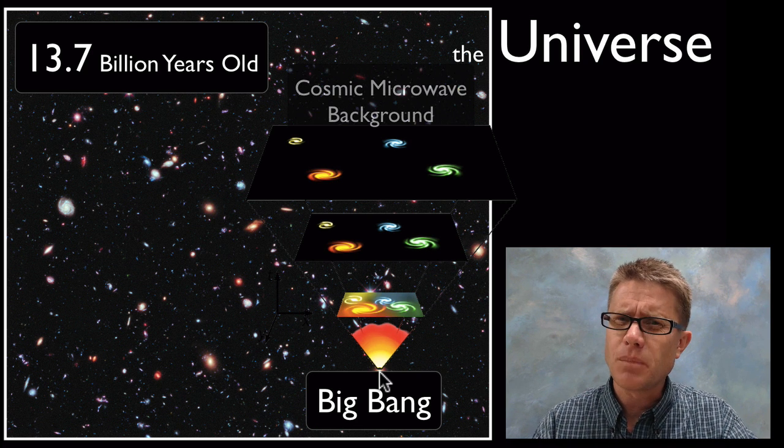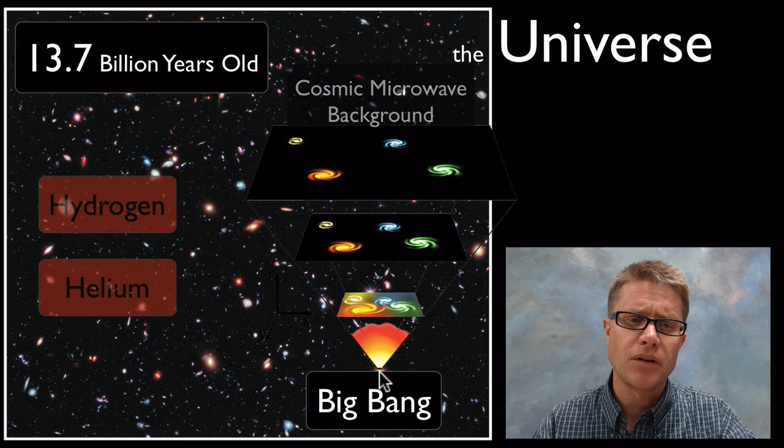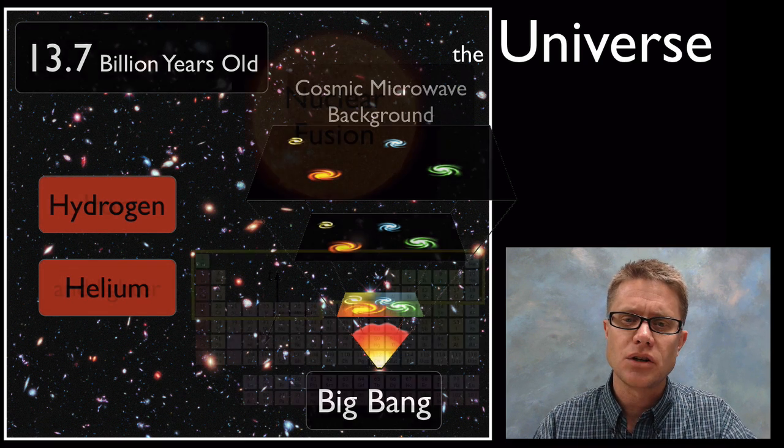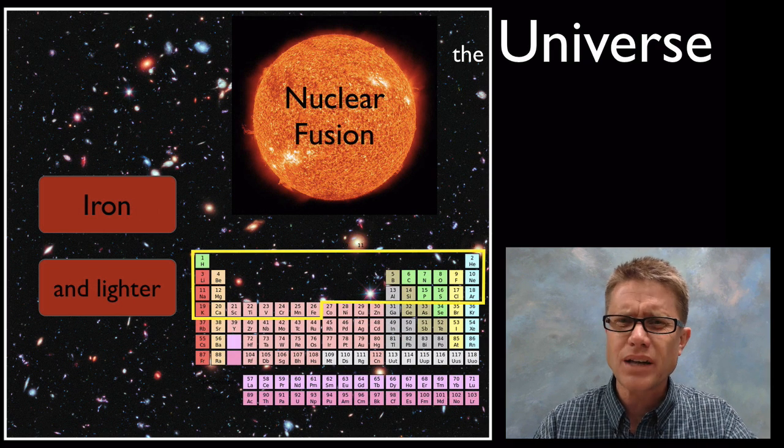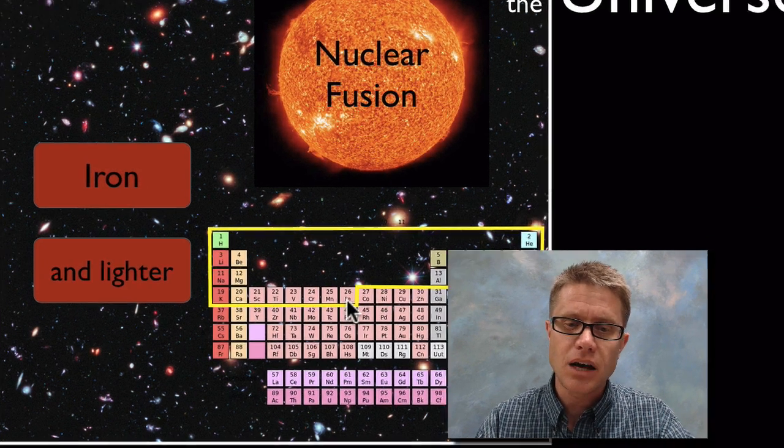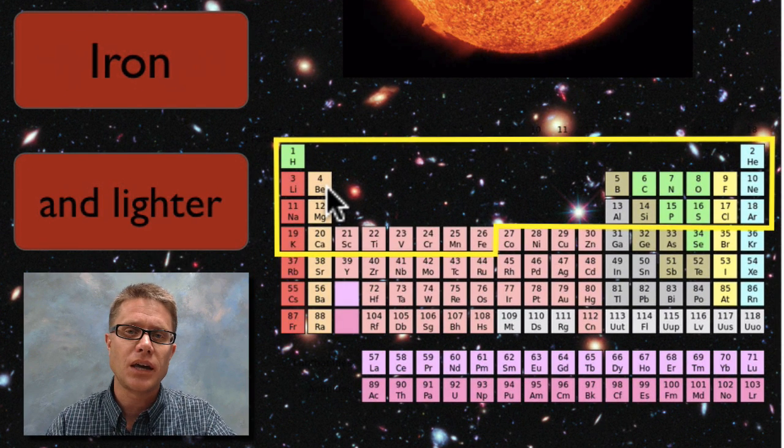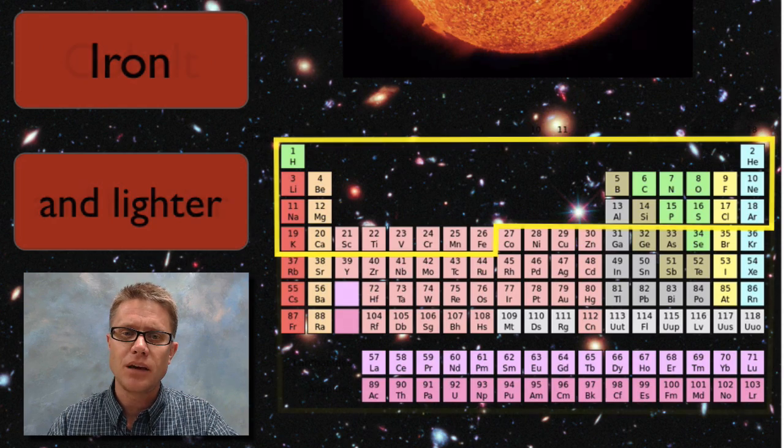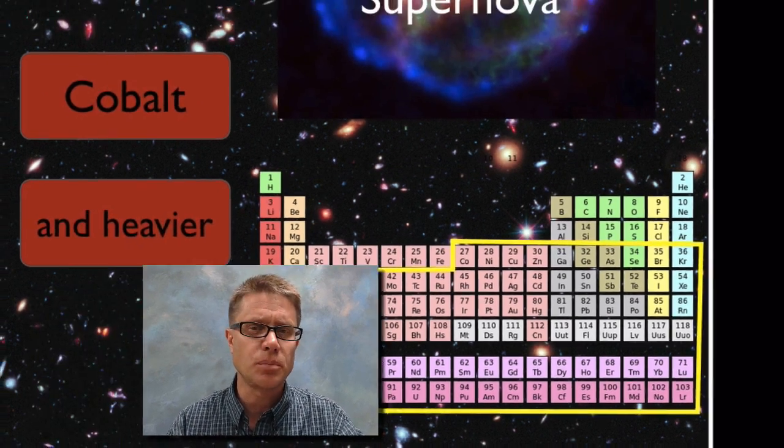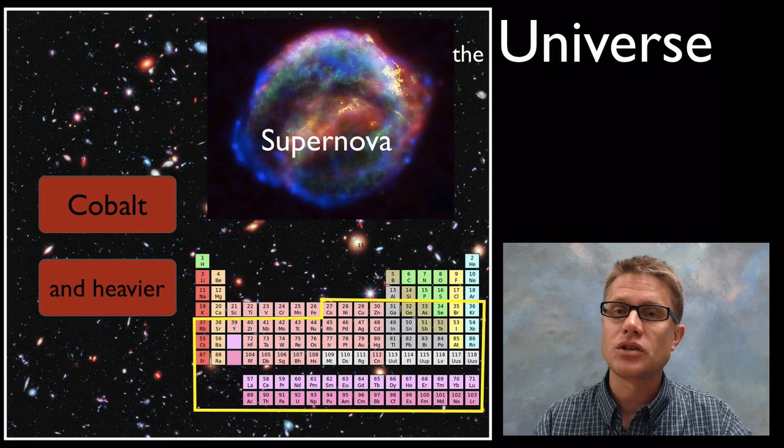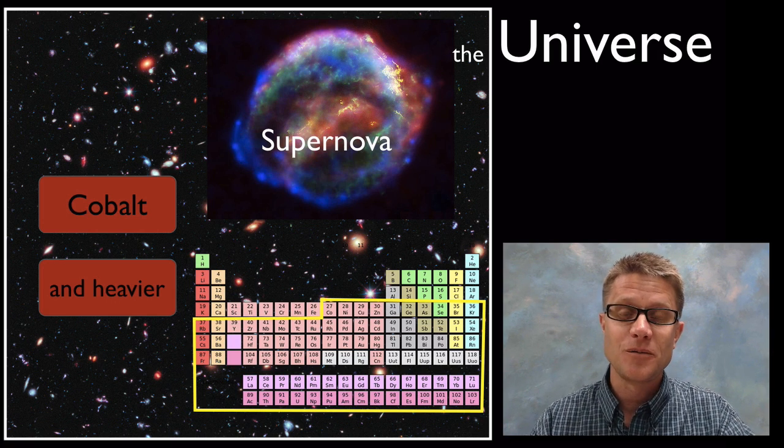What is the universe made up of? It's primarily made up of hydrogen and helium. When you're looking at those stars, you're mostly looking at hydrogen and helium. Where did the rest of us come from? Everything that is iron and lighter on the periodic table came from the nuclear fusion inside stars. What about the rest of the periodic table? That came from supernova or explosions of stars. You literally are made of star dust, which is pretty cool.